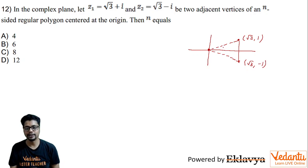The distance being 2. So this, you may say, is the center of the polygon because it is already given that it is centered at origin.